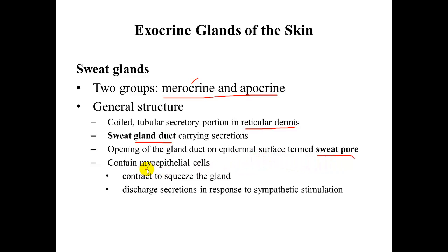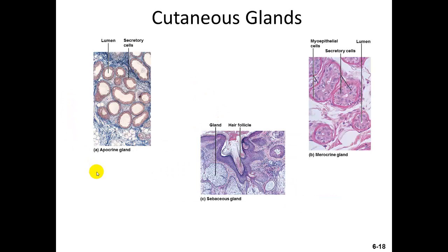Sweat glands also contain myoepithelial cells — myo meaning muscle, epithelial meaning epithelium. These are muscle cells that contract to squeeze the gland and force sweat out, discharging secretions in response to sympathetic stimulation. Here is a figure showing the apocrine gland and the merocrine gland, with secretory cells, myoepithelial cells, and the lumen — the open space through which secretions are delivered.